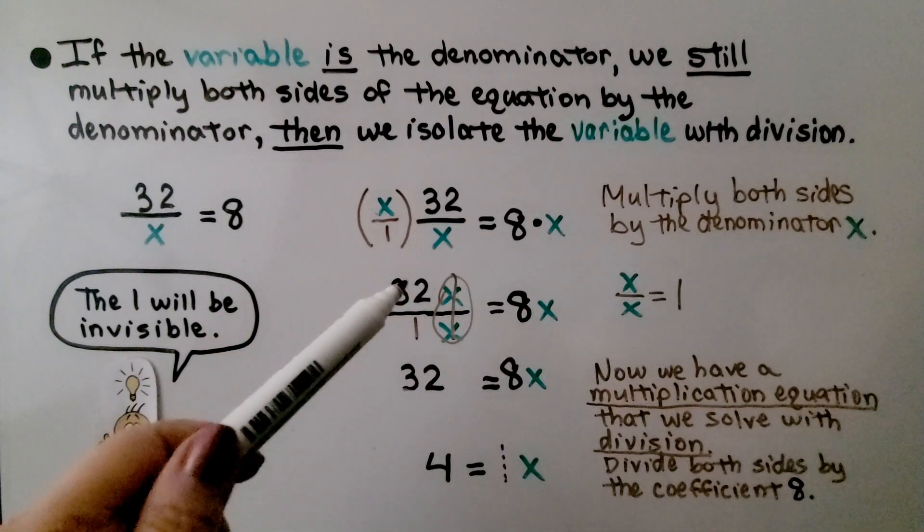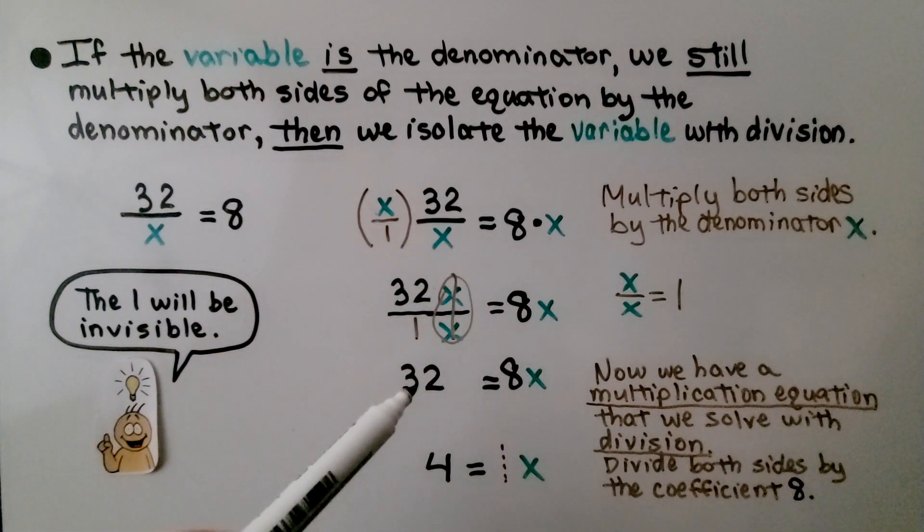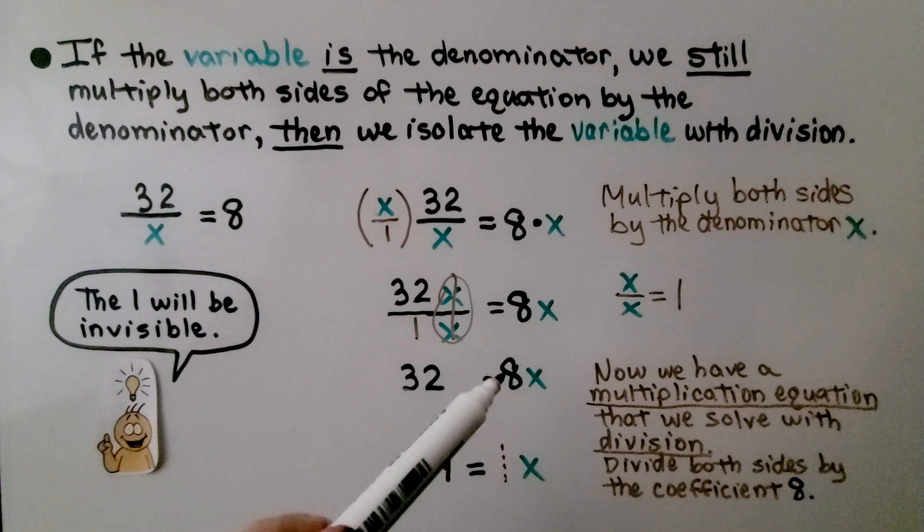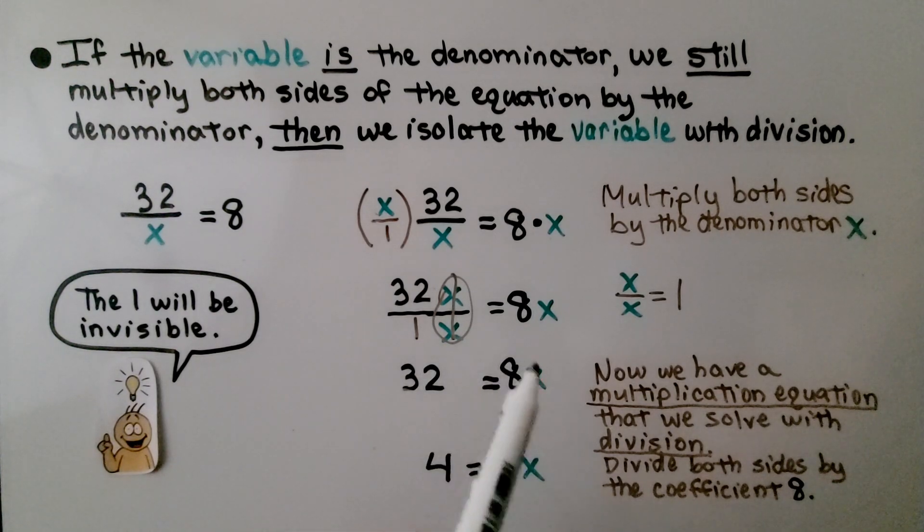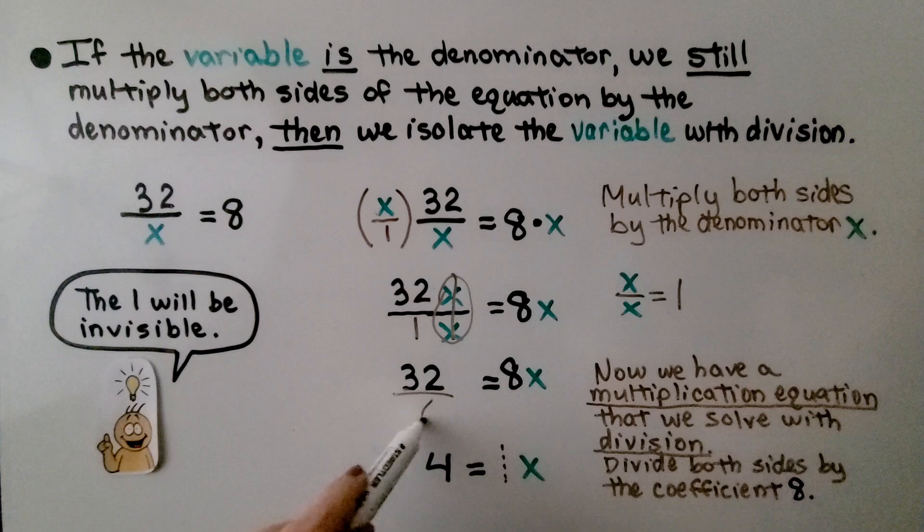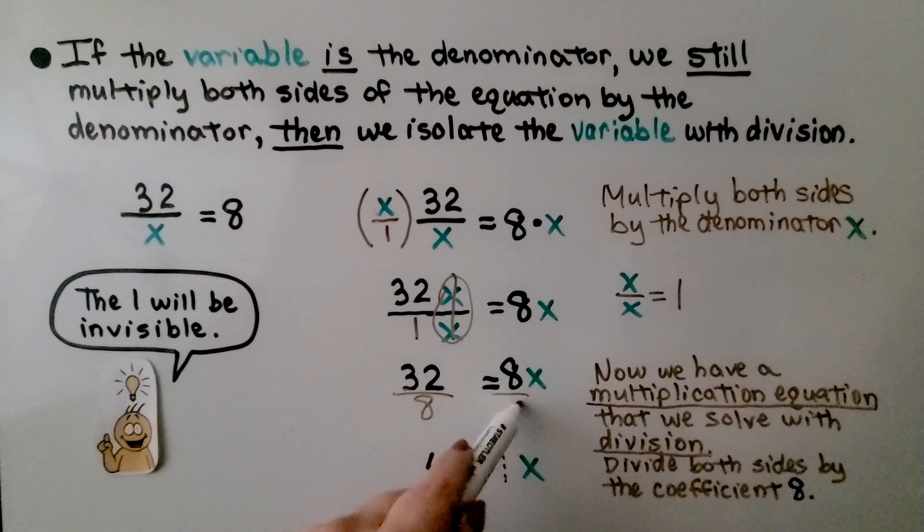Now we have 32 times 1, which is 32 on this side. And we have 8x on this side. Now we have a multiplication equation that we solve with division. We divide both sides of the equal sign by the coefficient 8.